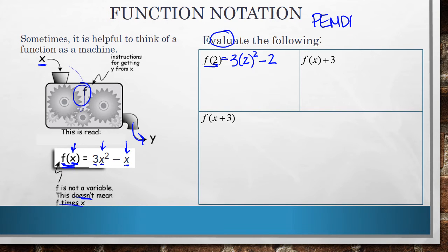Now to evaluate this, we have to remember order of operations, PEMDAS. So the first thing to do is square that 2, which is 4. So I get 3 times 4 is 12, and 12 minus 2 is 10.